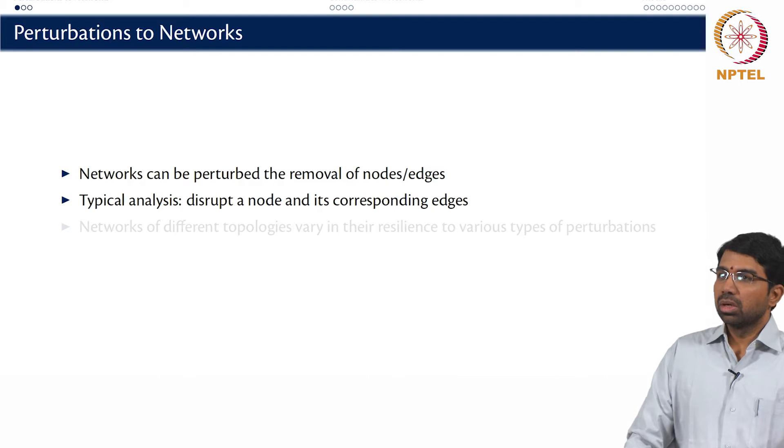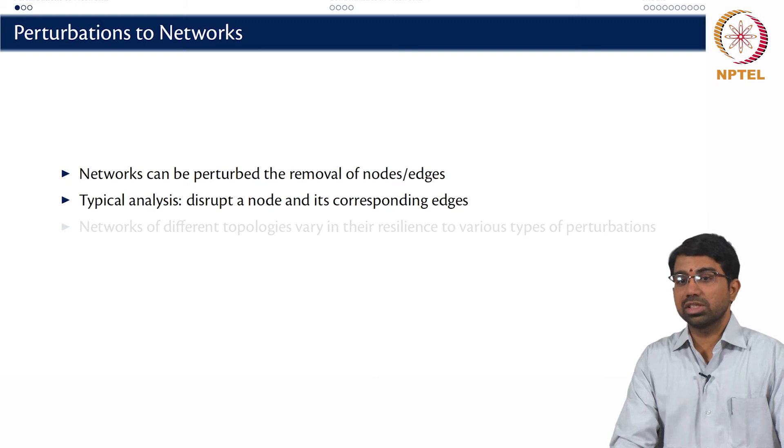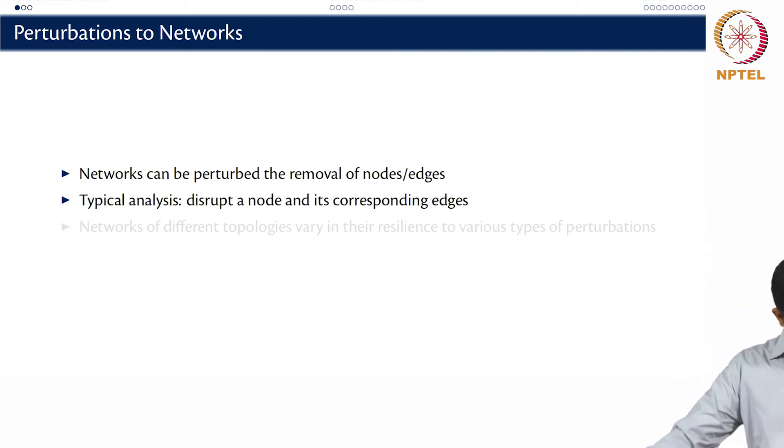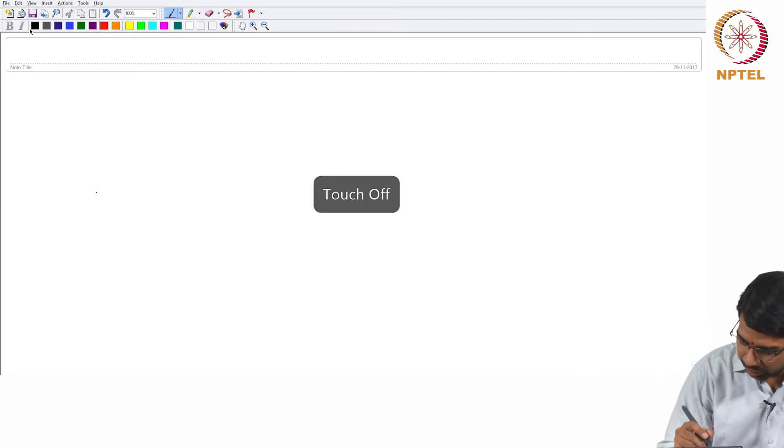What about addition of nodes? You can add nodes and so on, but in general we study the perturbation to removal. In biological networks, you are often interested in trying to find out what happens when something fails. You can also study what happens when you add something, but more than adding something, maybe in a biological network context, one interesting perturbation would be what happens when a gene duplicates.